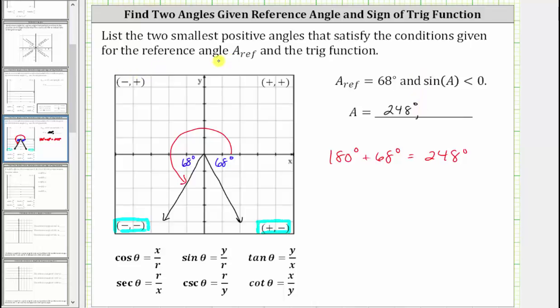And now to find the second smallest positive angle, we start along the positive x-axis and rotate counterclockwise to the terminal side in the fourth quadrant, which would be this angle here.